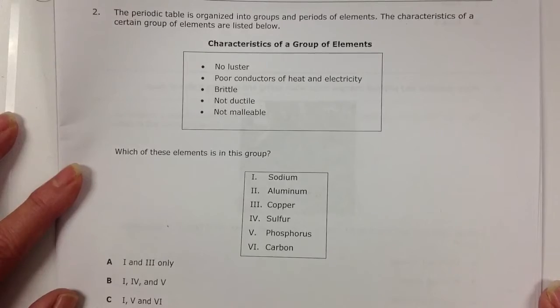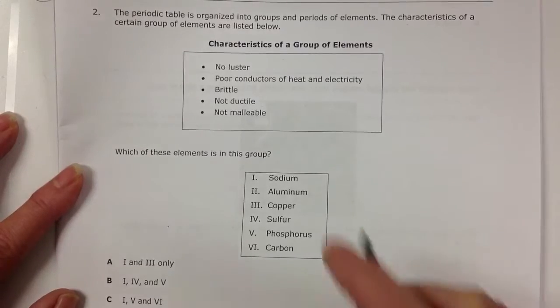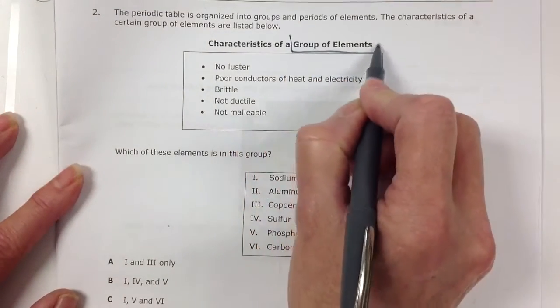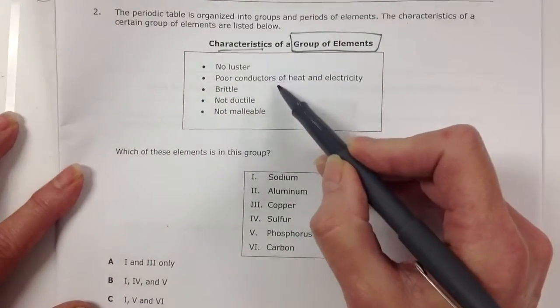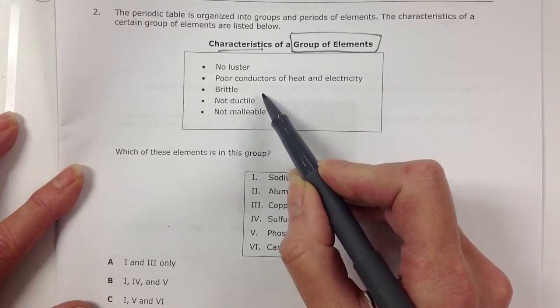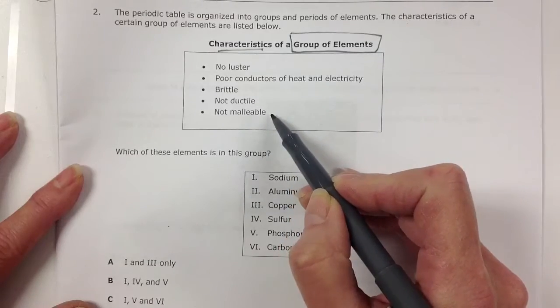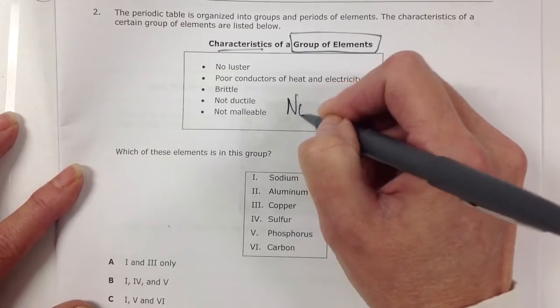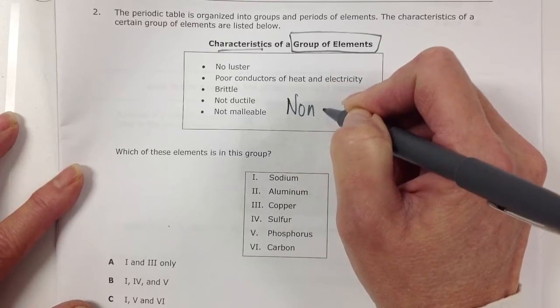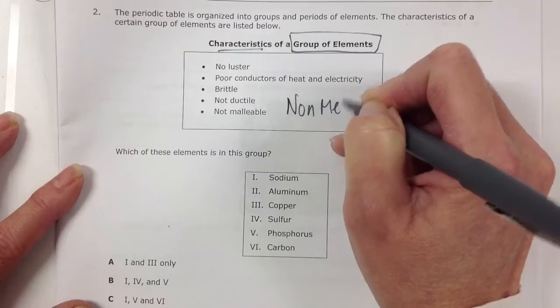So we have a data table and it gives us some characteristics of a group of elements. And what are those characteristics? No luster, poor conductors, brittle, non-ductile, not malleable. If you remember your metals and non-metals, you will easily recognize these are all characteristics of non-metals.